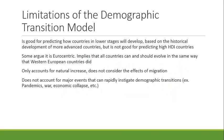That's not to say the model is perfect. The demographic transition model is good for predicting how countries in lower stages will develop based on the historic development of more advanced countries, but it's not great for predicting high HDI countries. There is some evidence that very highly developed countries — those with an HDI score of 0.9 or greater — actually see the trend reverse, with higher fertility rates once they reach that range.